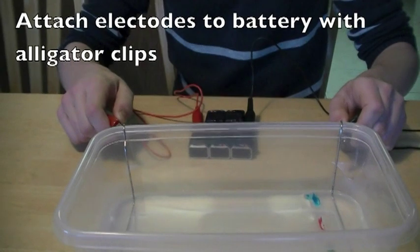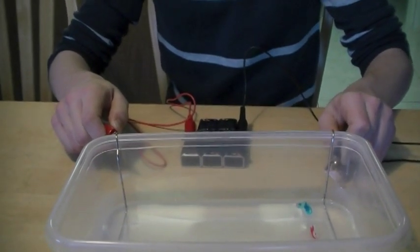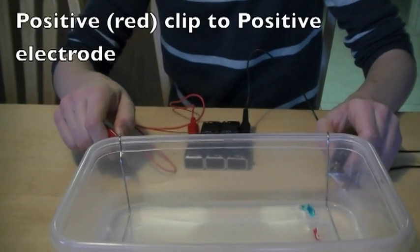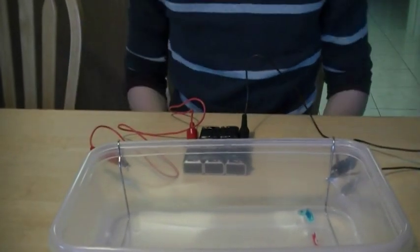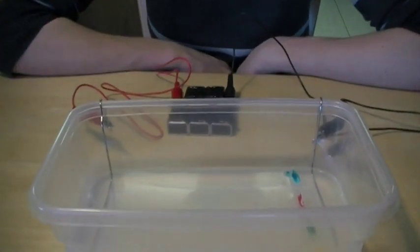Using the alligator clip leads, attach the battery pack to the wires resting on the gel chamber. The positive terminal of the battery pack should be connected to the positive electrode. This is the electrode towards which you want the food coloring dye to migrate as it separates. You should see bubbles forming around the electrodes in the buffer as the current passes through them.